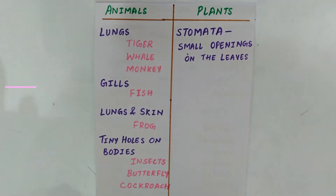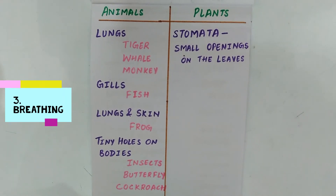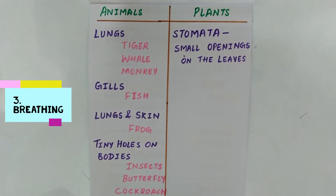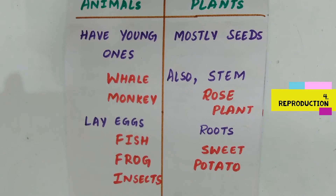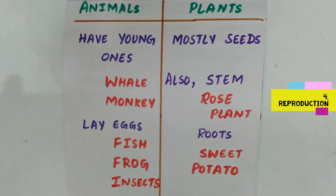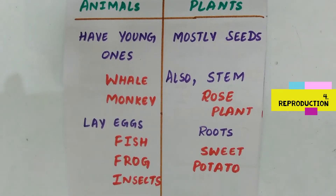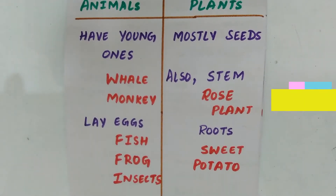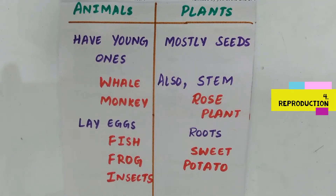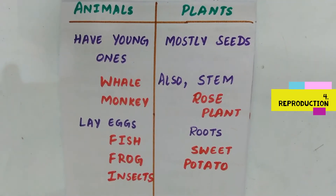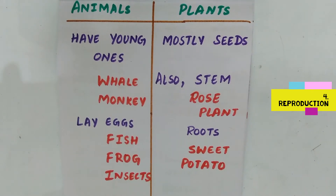Plants have stomata — small openings on the leaf. Animals have young ones — for example, whale and monkey. Some animals lay eggs — for example, fish, frog, and insects.